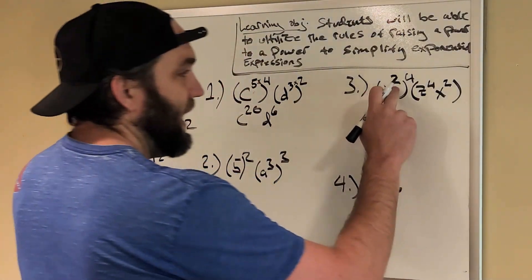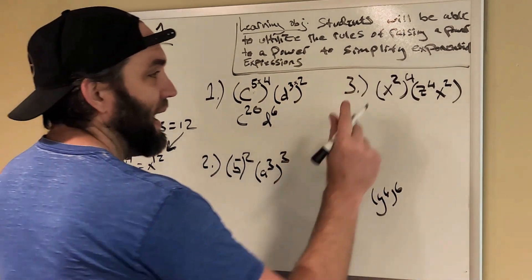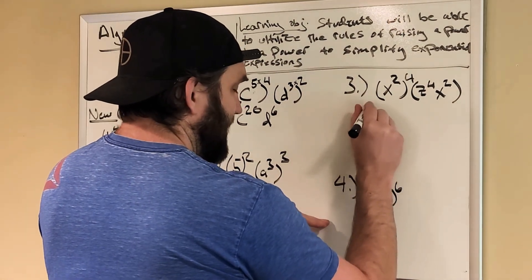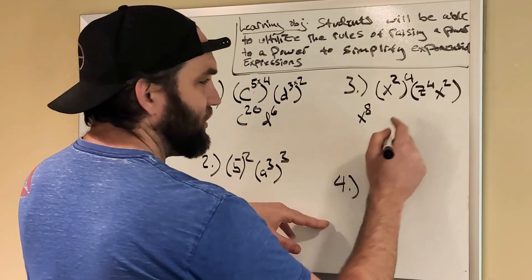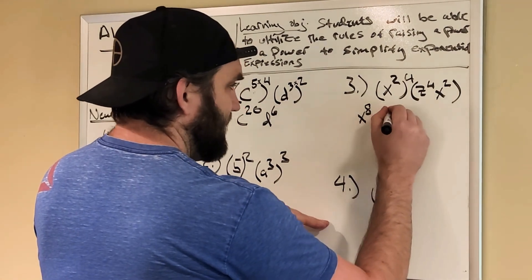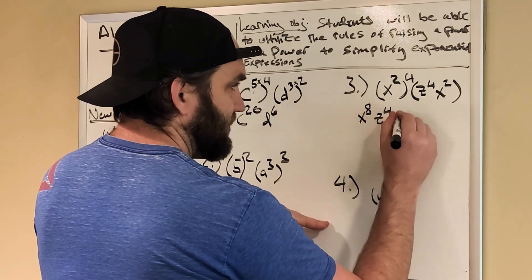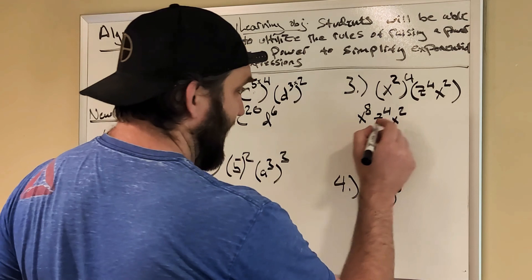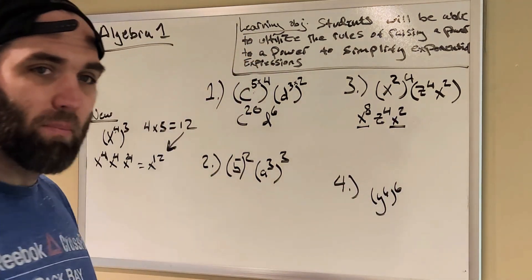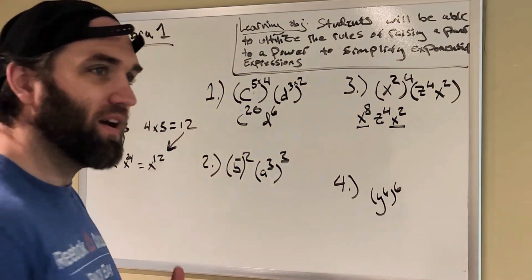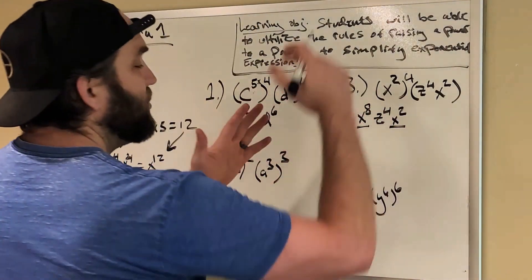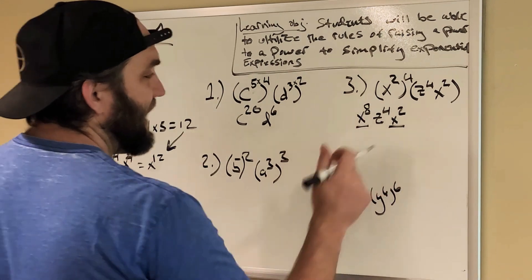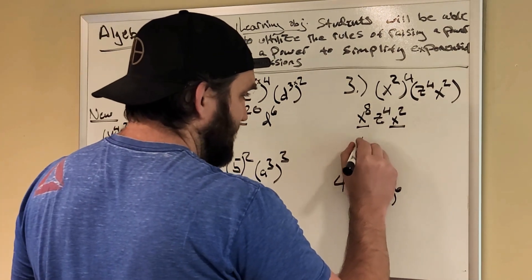Same thing here. x squared to the fourth power. Four times two is eight. So I have x to the eighth. And then bring down the rest because this isn't to another power. z to the fourth. x squared. Now I want to simplify. I have two x's again. All right. But instead of multiplying them, I'm adding them together because they're not to the power. They're actually multiplied by one another. So I just add those together. So I have x to the tenth.